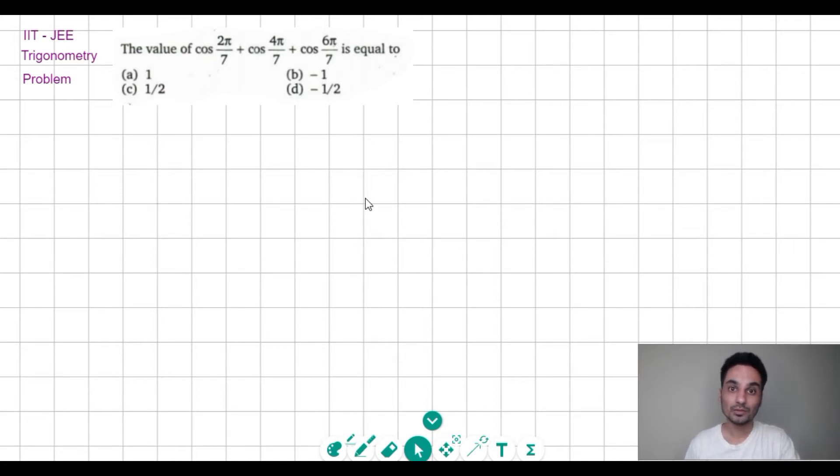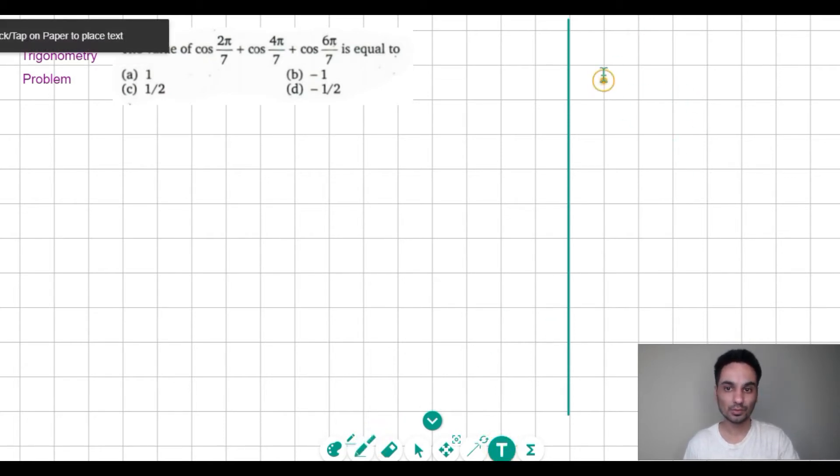Okay, so there are a number of ways to solve this question, like using the cos C + cos D formula, but I'll not be using that. Here I am taking a different approach to solve this question by using complex numbers, specifically Euler's form.